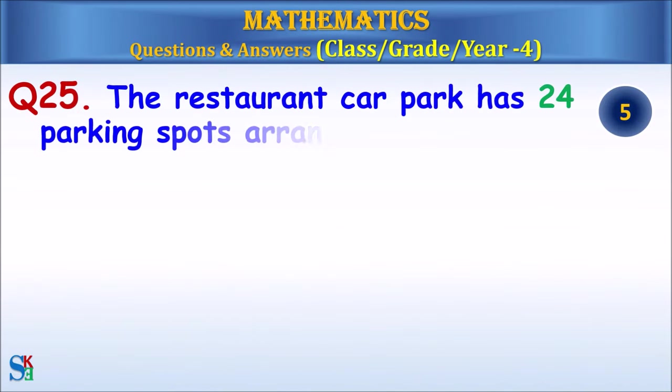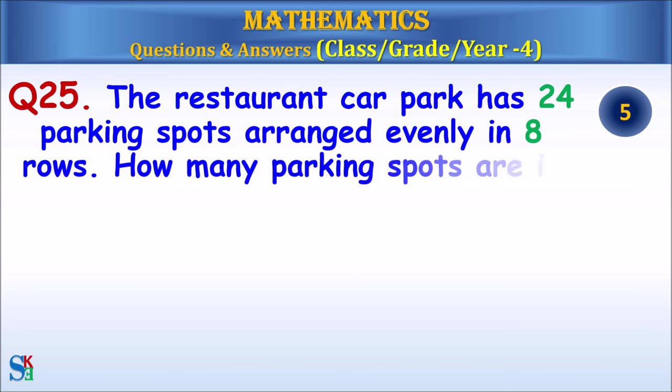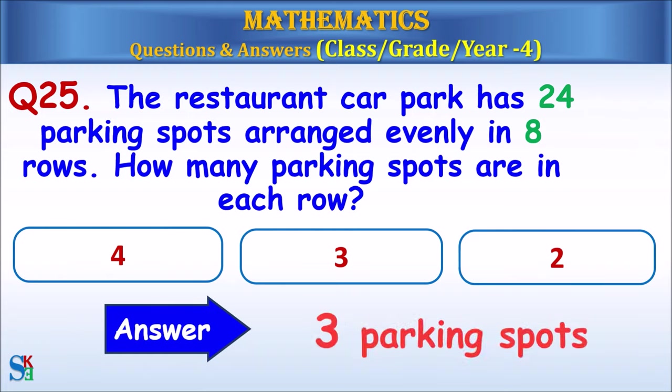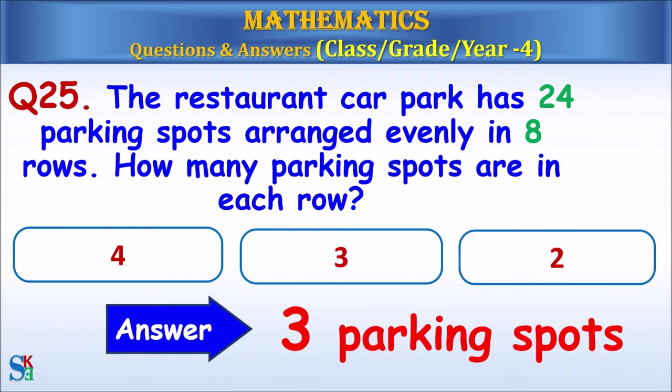Question 25: The restaurant car park has 24 parking spots arranged evenly in 8 rows. How many parking spots are in each row? The answer is 3 parking spots.